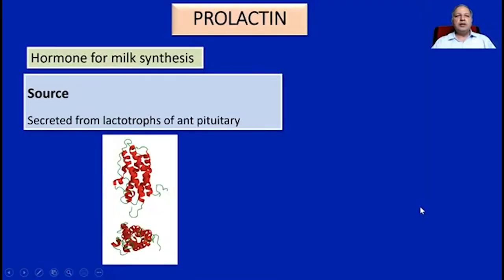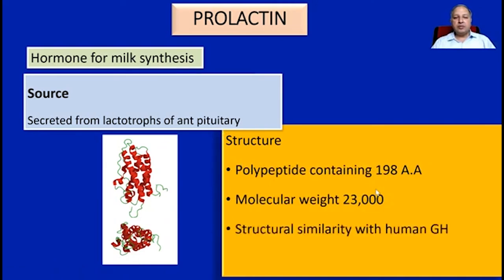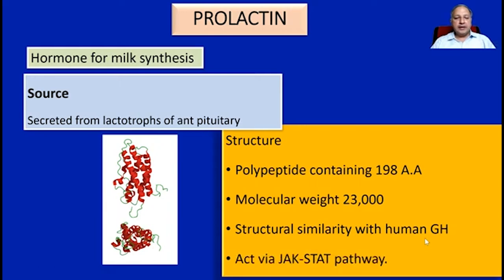The first hormone we are going to discuss today is prolactin, called as the hormone for milk synthesis. The source of prolactin hormone is the lactotrophs present in the anterior pituitary. Structurally, it is a polypeptide containing 198 amino acids with a molecular weight of 43,000. Importantly, it is structurally similar to human growth hormone and also acts like it via the JAK-STAT pathway.